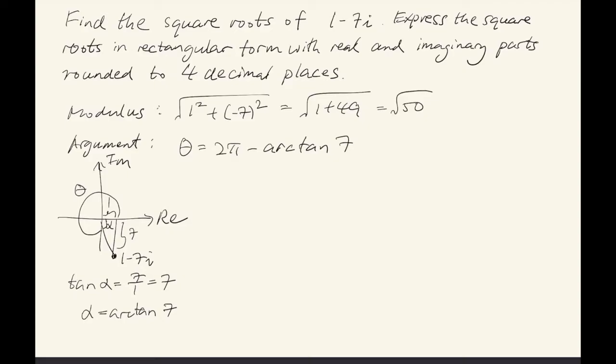So with these two pieces of information, we can write down the square roots. The modulus is usually denoted as r. And for a complex number in polar form, given by r times cis theta...